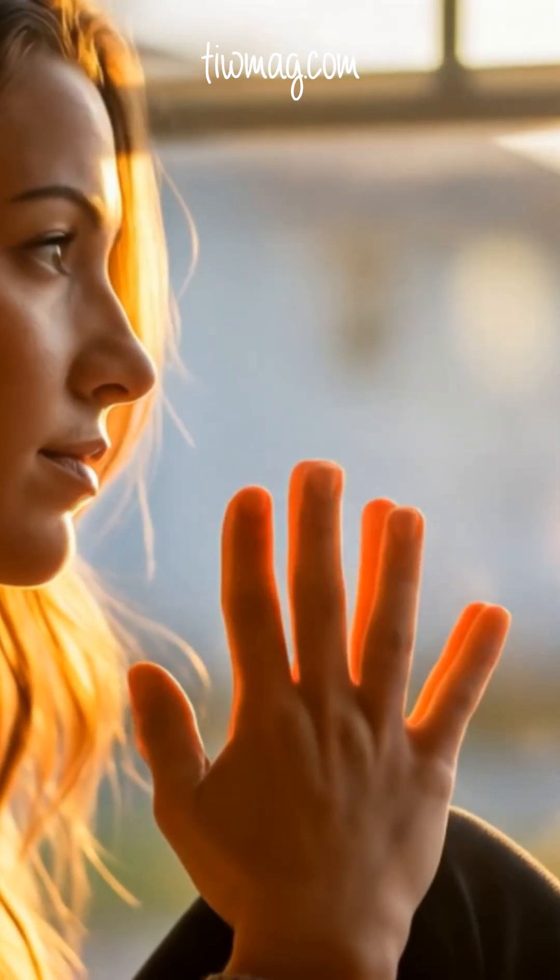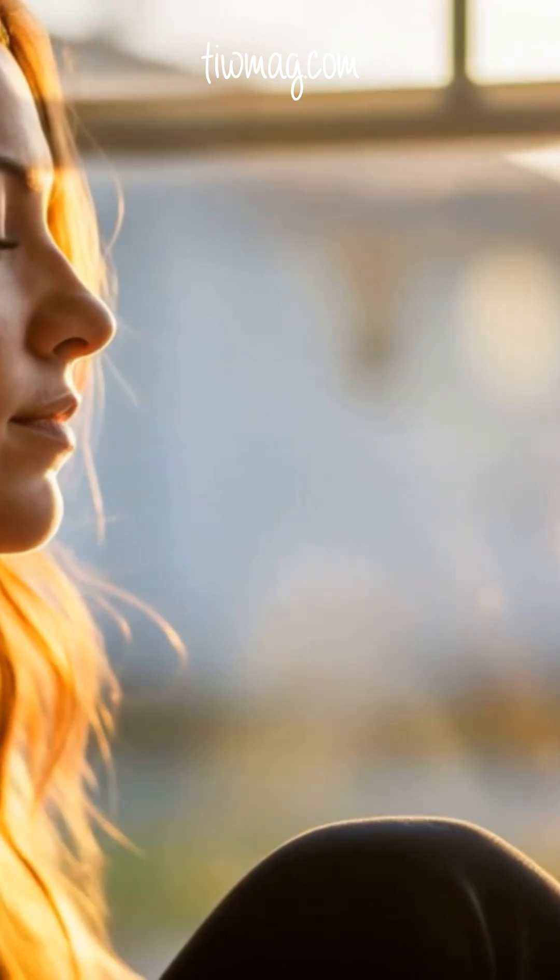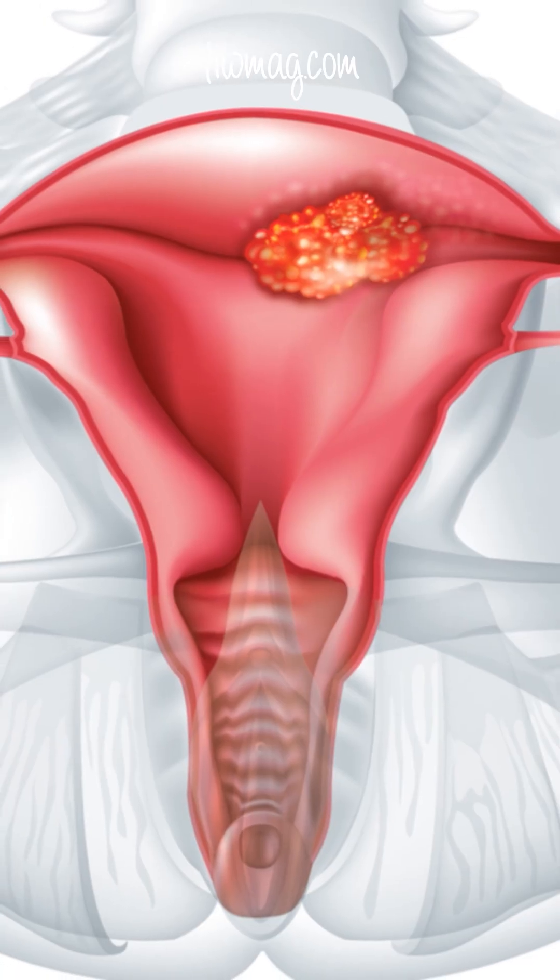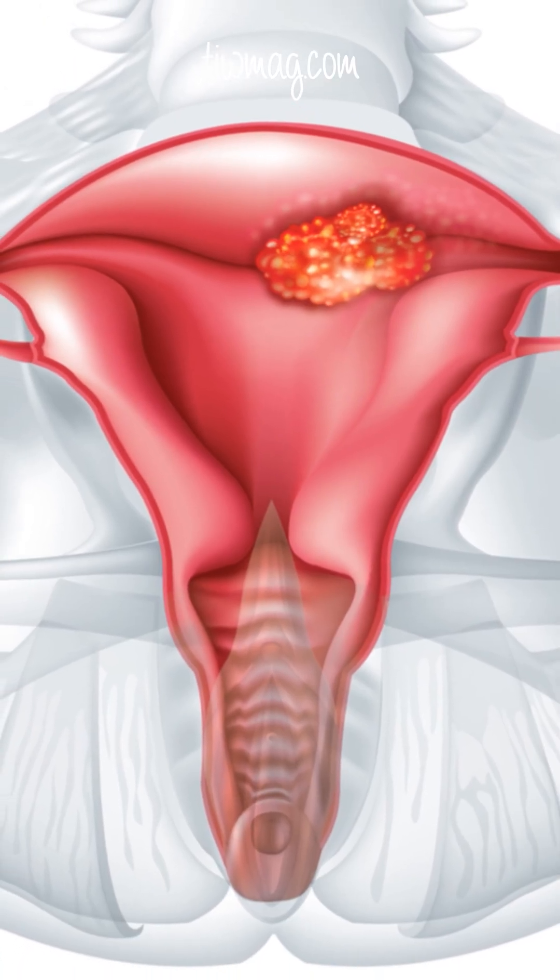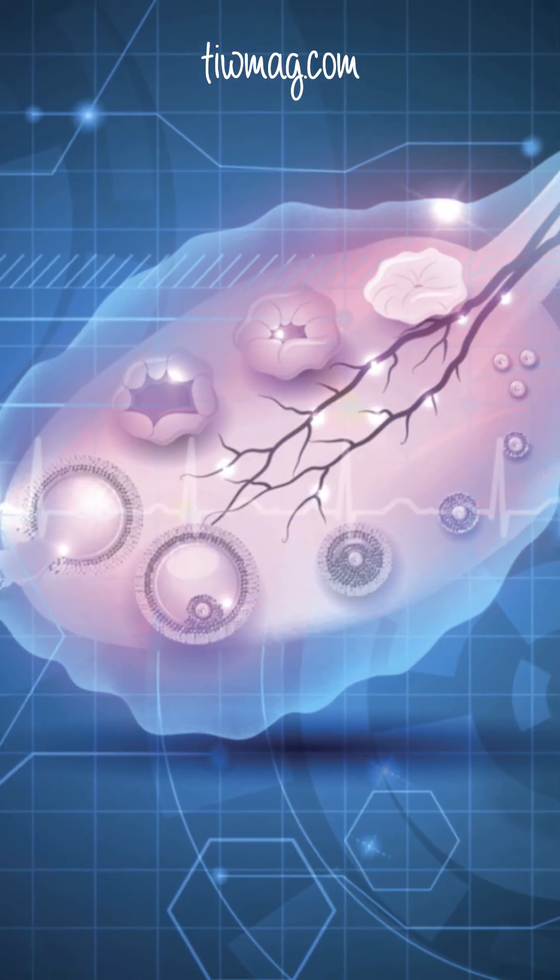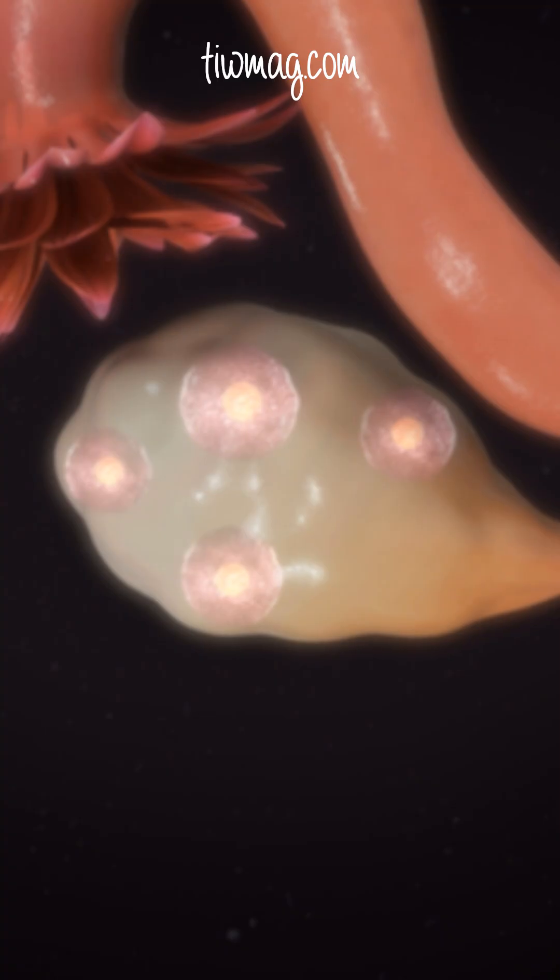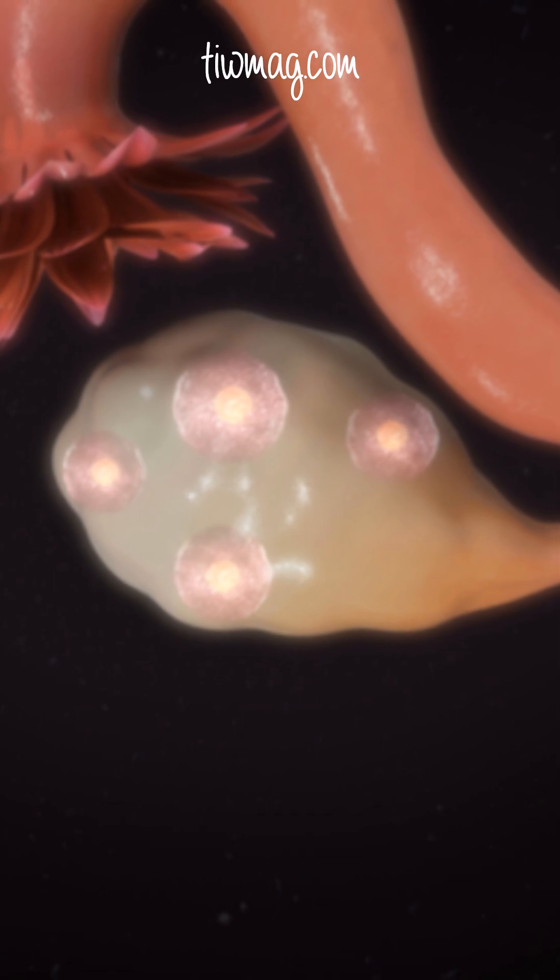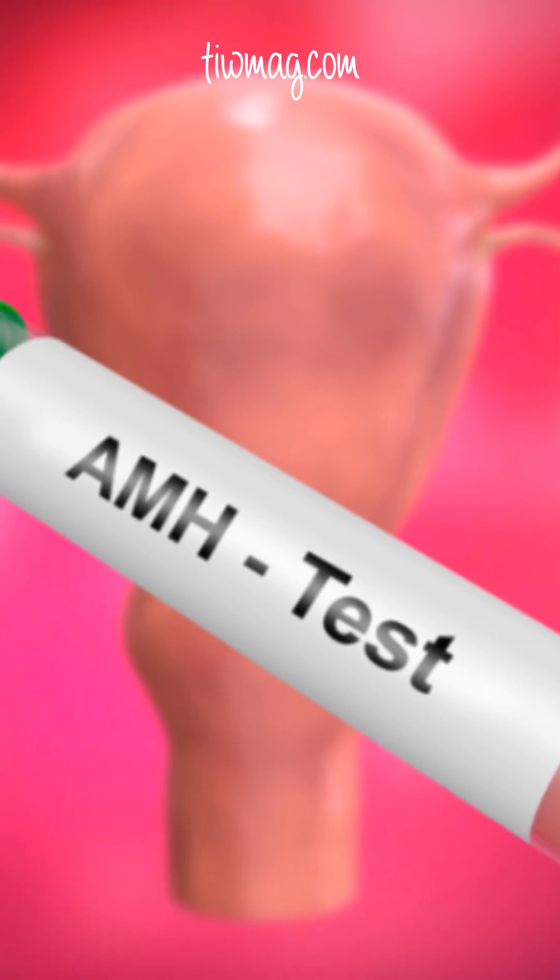Polycystic ovary syndrome (PCOS) is the most common endocrine disorder among women of reproductive age, with a prevalence estimated between 10 to 13 percent. It is characterized by ovulatory dysfunction, hyperandrogenism, and polycystic ovarian morphology.